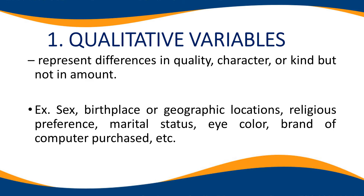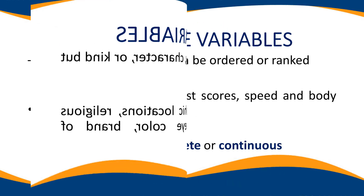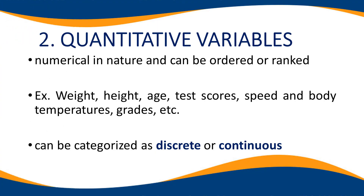Ibig sabihin, pag tinawag natin yung qualitative variables, ito ay non-numeric — hindi siya nabibilang. On the other hand, quantitative variables are numerical in nature and can be ordered or ranked, like weight, height, age, test scores, speed, body temperatures, grades, etc. Quantitative variables can be categorized as discrete or continuous. Pag quantitative variables, ito yung pwede mong bilangin — it involves numbers or any characteristics that can be counted.